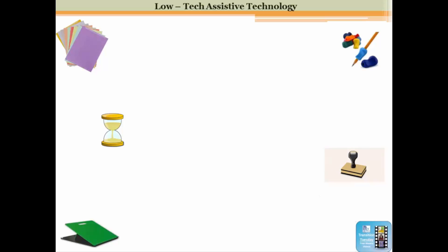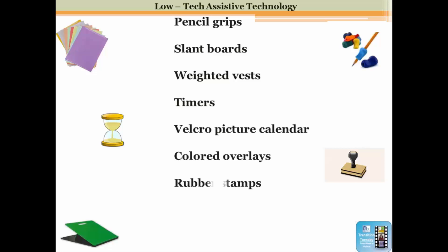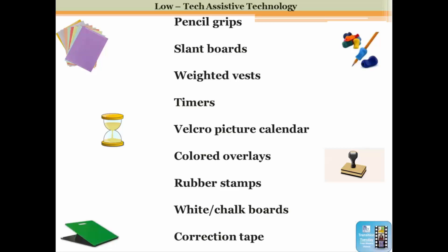Here are some examples of low-tech assistive technology devices. Many times these devices are also listed under accommodations in the student's IEP. These include the use of pencil grips, slant boards, weighted vests, timers, Velcro picture calendars, colored overlays, rubber stamps, white or chalk boards for student use, and correction tape.